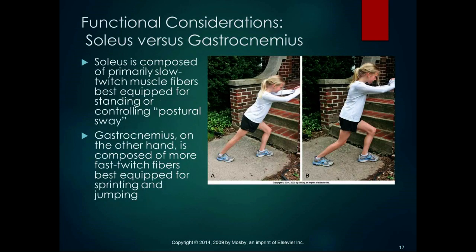The soleus is primarily composed of slow-twitch fibers, best equipped for standing and controlling postural sway — a big function of our ankles. The gastroc is fast-twitch — a jumping and sprinting muscle. To stretch the gastroc, extend the knee and dorsiflex the ankle. To isolate the soleus stretch, flex the knee to take the gastroc out of it. It's always nice to teach people to stretch both.